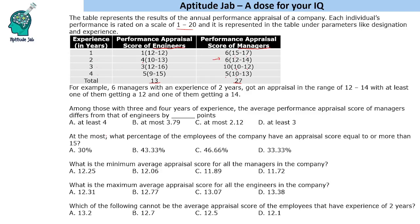Now let us answer the questions. The first question says: among those with 3 and 4 years of work experience, the average performance appraisal score of managers differs from that of engineers by how many points? We have to deal with two variables — one for managers and one for engineers. The question involves at least/at most type constraints, so we will find the extreme ranges.